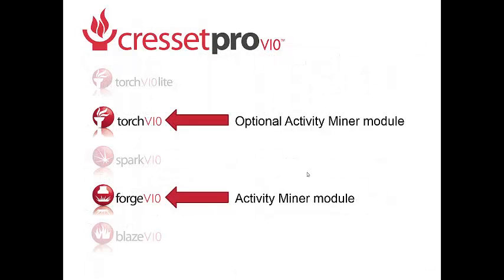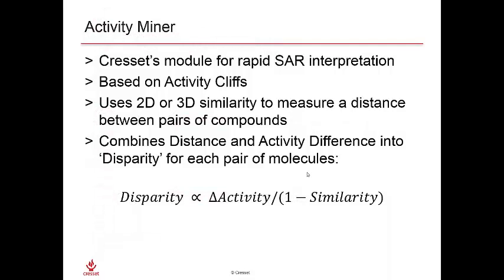For our SAR analysis today, we will look at ActivityMiner, which is included within Forge and an optional module for Torch. ActivityMiner is Cresset's module for rapid SAR interpretation and is based on the notion of activity cliffs. It uses 2D or 3D similarity to measure a distance between pairs of compounds. Combining distance and activity differences for pairs of molecules, we come up with the idea of disparity. Molecule pairs that are highly similar but have large differences in activity would be of higher disparity, so this 1-minus-similarity term is effectively a distance between two molecules.